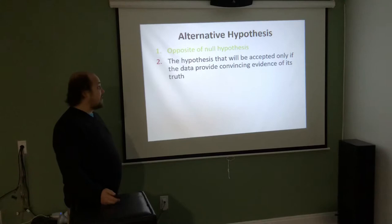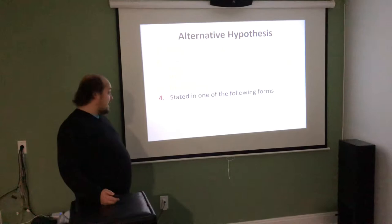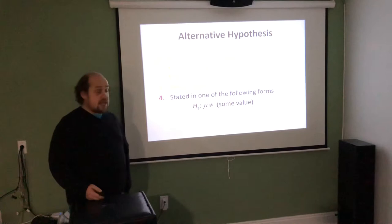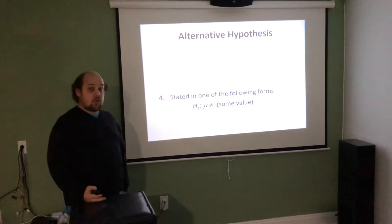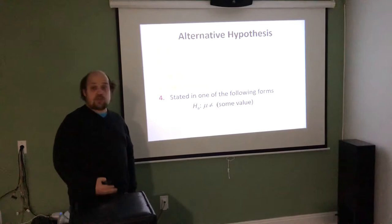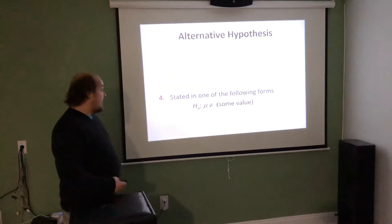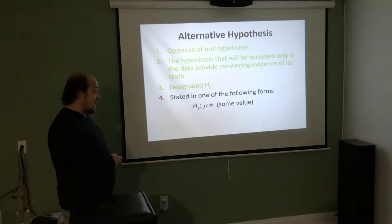The alternative hypothesis is the opposite of the null. It's the hypothesis that will be accepted only if the data provide convincing evidence of its truth, designated HA. It's stated in one of the following forms: HA — mu is not equal to some population value, mu is less than some value, or mu is greater than some value.